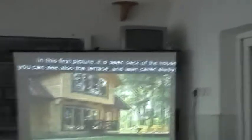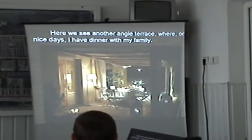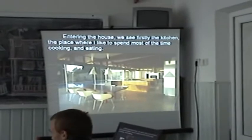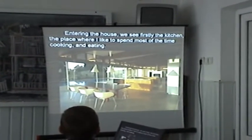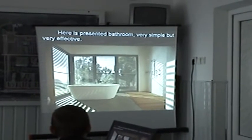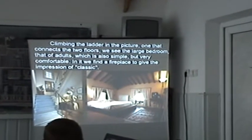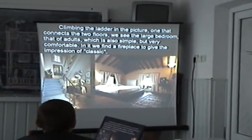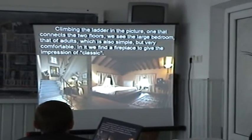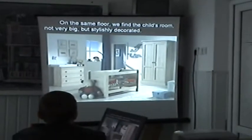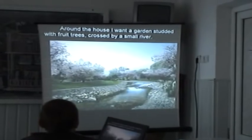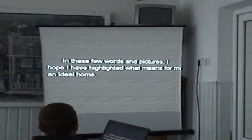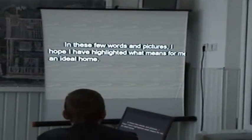Here we see another angled terrace where, on nice days, I have dinner with my family. Entering the house, we see firstly the kitchen — the place where I like to spend most of the time cooking and eating. Here is presented the bedroom, very simple but very cozy. Climbing the ladder connecting the two floors, we see a large master bedroom which is also simple but very comfortable, and which has a fireplace to give the impression of classic style. On the same floor, we find the children's room, not very big but stylishly decorated. Around the house, I want a garden surrounded by fruit trees, crossed by small streams. I hope I have highlighted what an ideal home means to me.